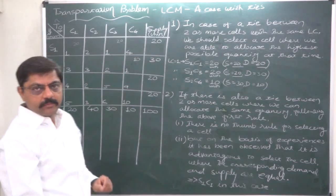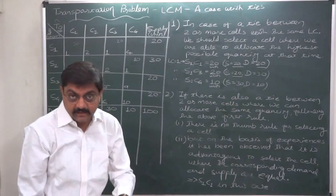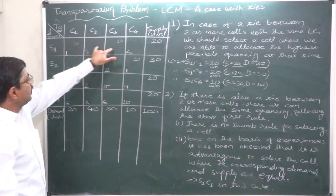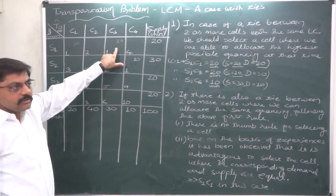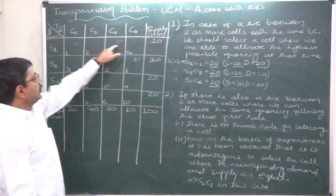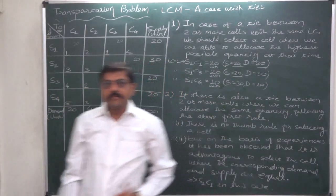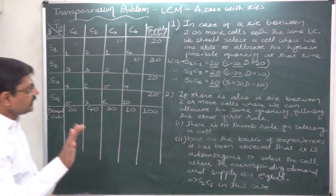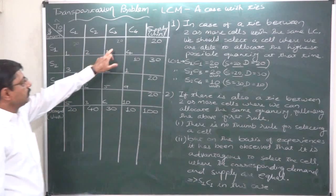We face a unique situation here — again there is a tie, because we have two cells where we can allocate 20 units each. Now the question is which cell should we allocate to first. Let me be clear: there is no strict thumb rule for this second-level tie.